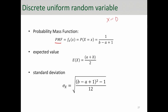Taking the example of X ~ discrete uniform(1, 20), the PMF would be 1 over (20 minus 1 plus 1), so 1 over 20. We have 20 points in that range, so 1/20 is the probability of each — they're equally likely. The expected value is (a + b) / 2, so (1 + 20) / 2 = 10.5. For standard deviation, you use the closed-form formula as a function of b and a. If you want variance, just remove the square root.